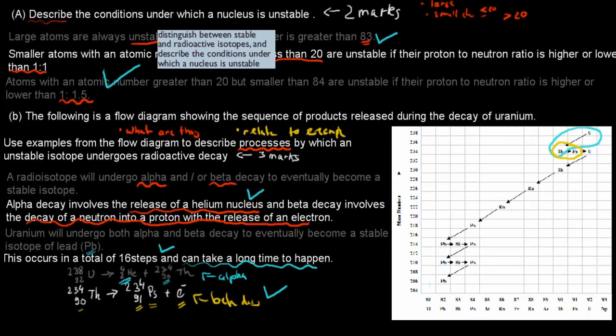And if you want to know what actual syllabus dot point this was related to, the question itself was distinguish between stable and radioactive isotopes and describe the conditions under which a nucleus is unstable.